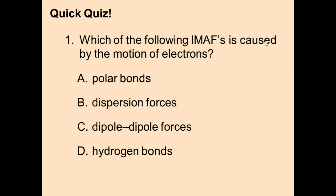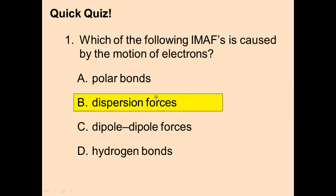Quiz: Which IMAF is caused by the motion of electrons? Polar bonds, dispersion forces, dipole-dipole, or hydrogen bonds? The answer is dispersion forces — electrons cluster to one side, forming a slightly negative pole and slightly positive pole, and they attract.